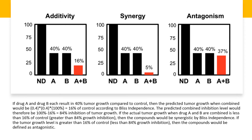For example, if drug A and drug B each result in 40% tumor growth compared to control, then the predicted tumor growth when combined would be 0.4 times 0.4 times 100% equals 16% of control, according to Bliss independence. The predicted combined inhibition level would therefore be 100% minus 16%, equal to 84% inhibition of tumor growth. If the actual tumor growth when drug A and drug B are combined is less than 16% of control, then the compounds would be synergistic by Bliss independence. If the tumor growth level is greater than 16% of control, then the compounds would be defined as antagonistic.